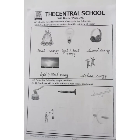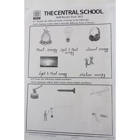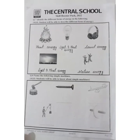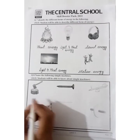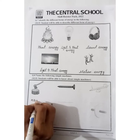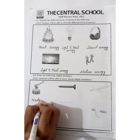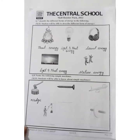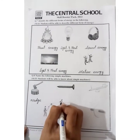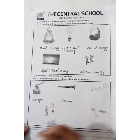Question number 8 is: name the following simple machines. This is wedge — right here, wedge, W-E-D-G-E. And this is screw — right here, screw, S-C-R-E-W.